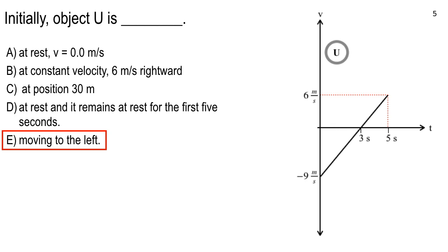For this one we have a positive acceleration — slope is up to the right — but it starts negative. So the object is heading left, slows down, stops at three seconds over here. Then after the three-second mark, he's moving to the right. He doesn't make it all the way back to the origin, because the leftward motion triangle is bigger in area than the rightward distance triangle up here.